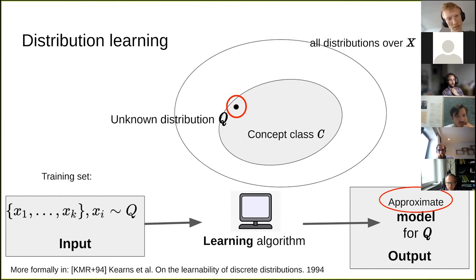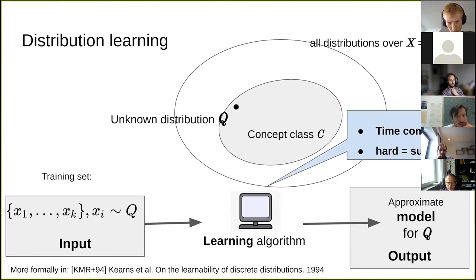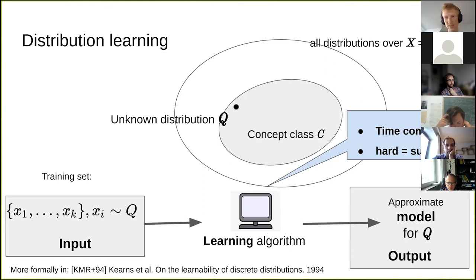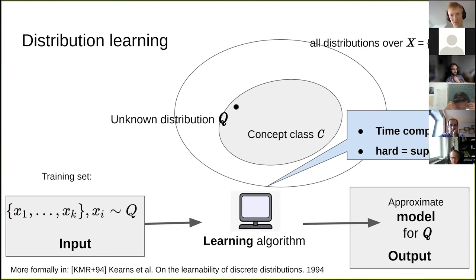We judge the hardness or easiness of the learning problem by time complexity. Whenever I say something is hard, I mean it takes super-polynomial runtime. A common other metric in learning theory is sample complexity — the number of samples required — but our results so far don't have a lot to say in that regard, and it's something I'm definitely very interested in thinking about in the future.